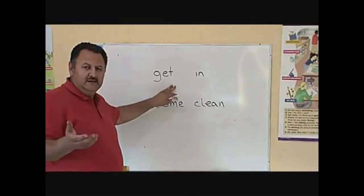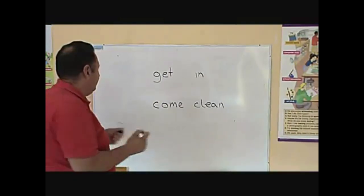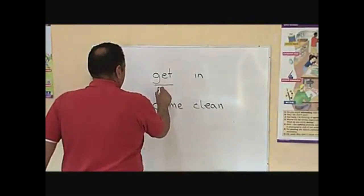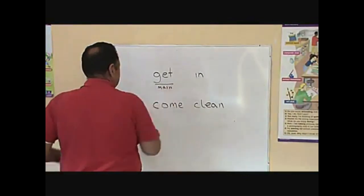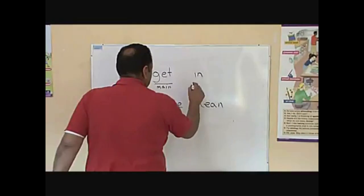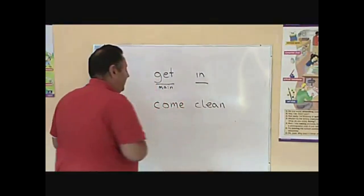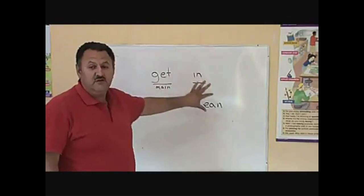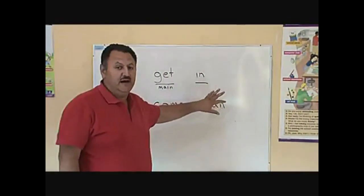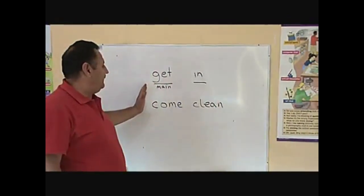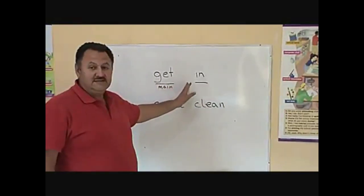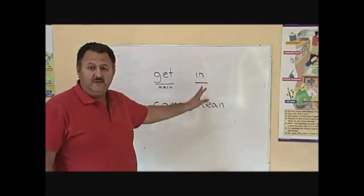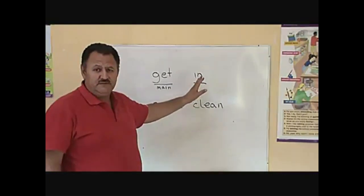Get is called the main verb. And then we have a particle. We have the main verb plus a particle. We have a phrasal verb. It's composed by a main verb plus usually an adverb or a preposition.